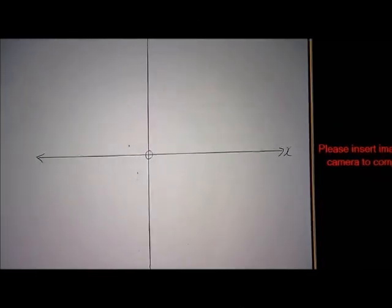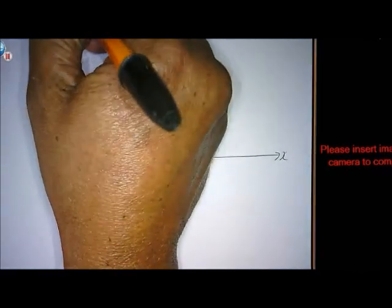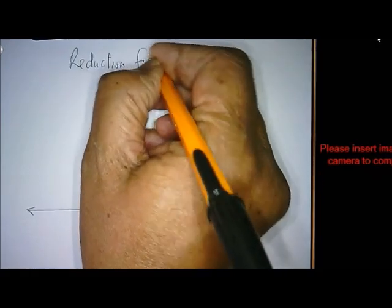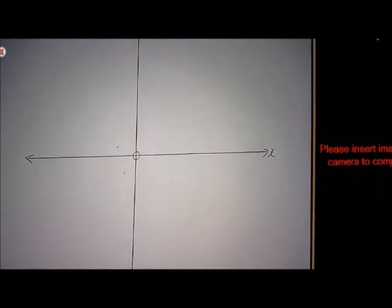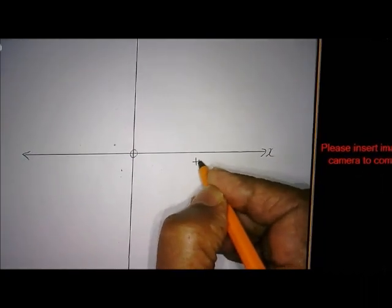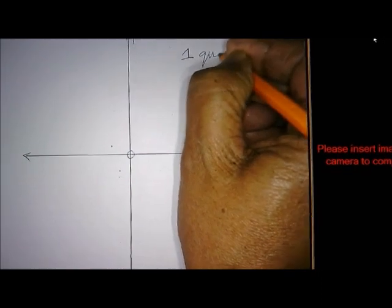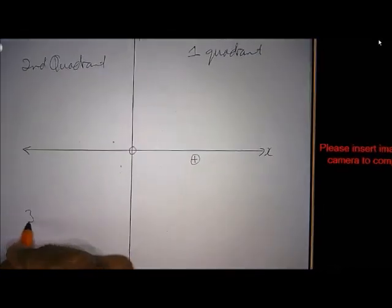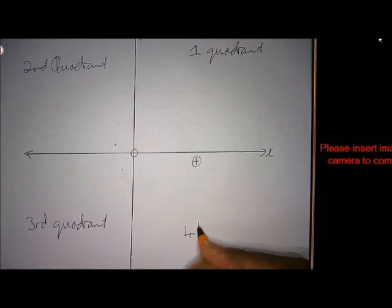Using this drawing for a reduction formula. This sketch is very important. Remember, this is the positive arm of the x-axis. This is what we call the first quadrant, this is the second quadrant, this is the third quadrant, and this is the fourth quadrant.